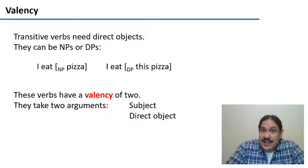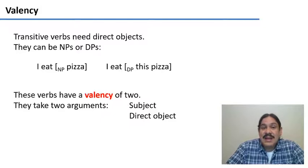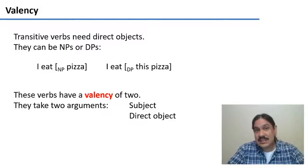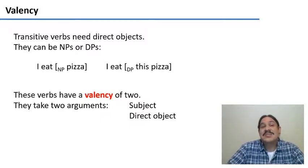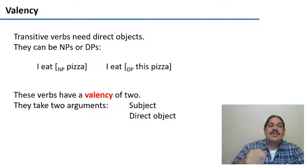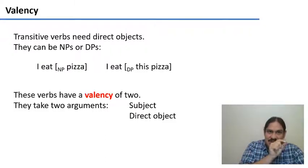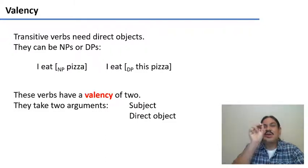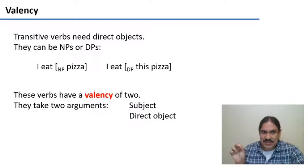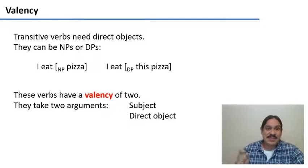Transitive verbs, on the other hand, need direct objects. For example, in 'I eat pizza' or 'I eat this pizza,' in theory, I always need to be eating something. So these verbs are going to have a valency of two, because you need the subject — which is 'I' — and then the direct object, which is 'pizza' or 'this pizza,' for example.